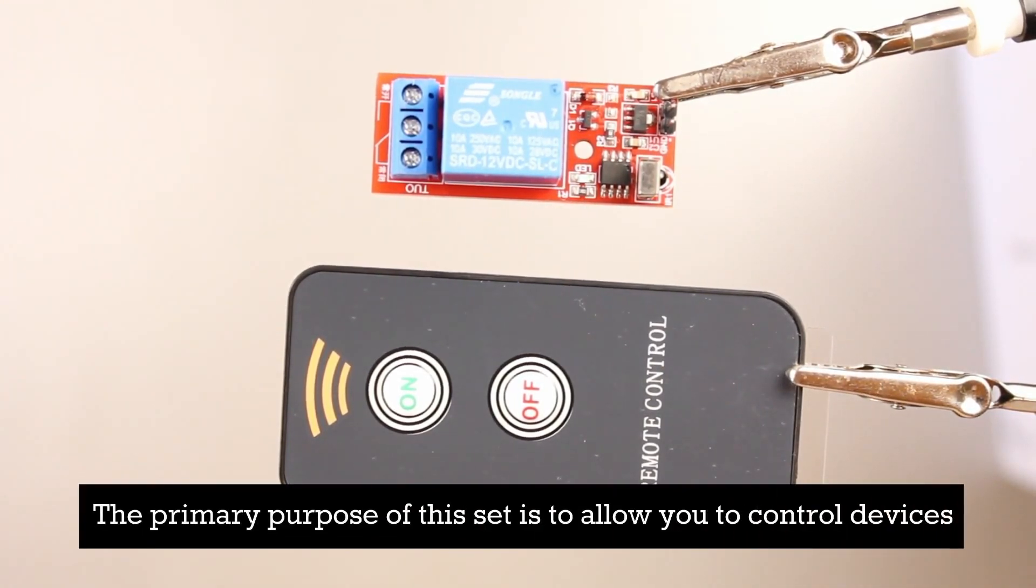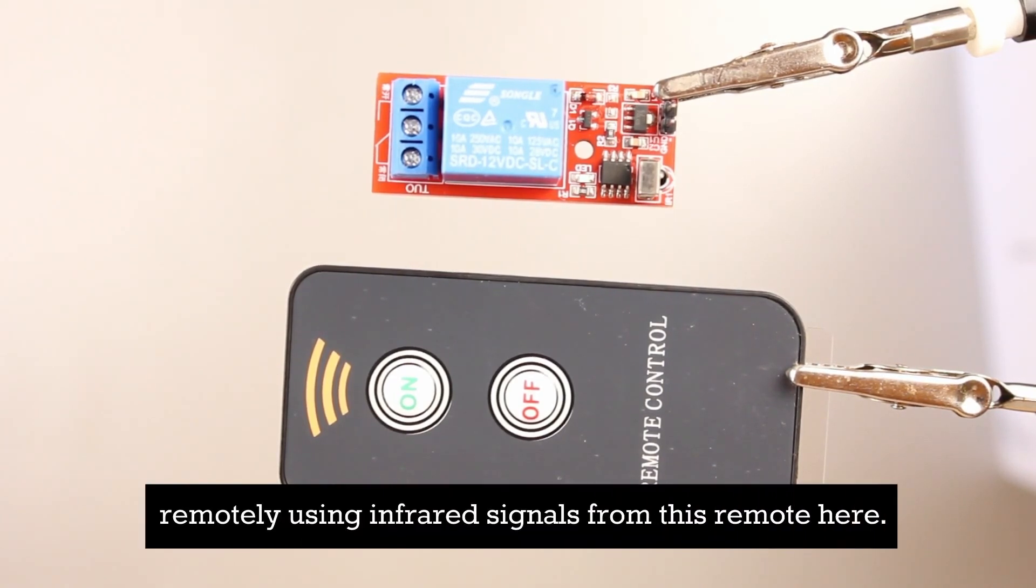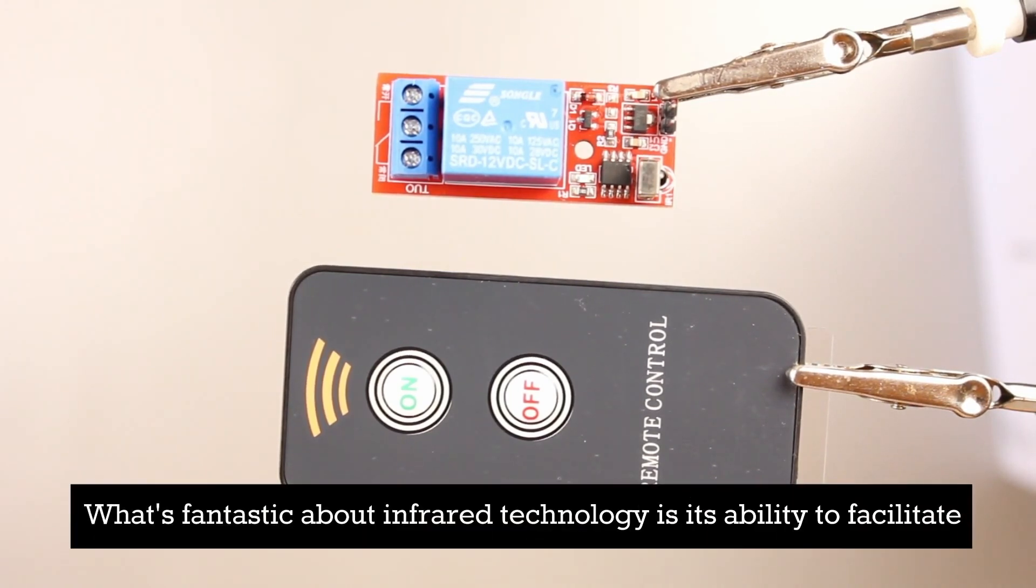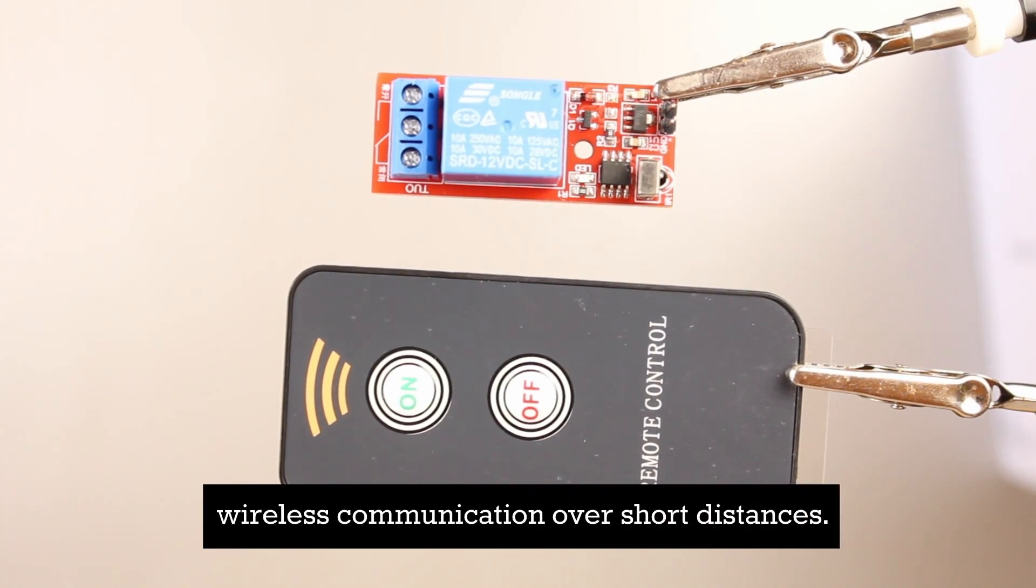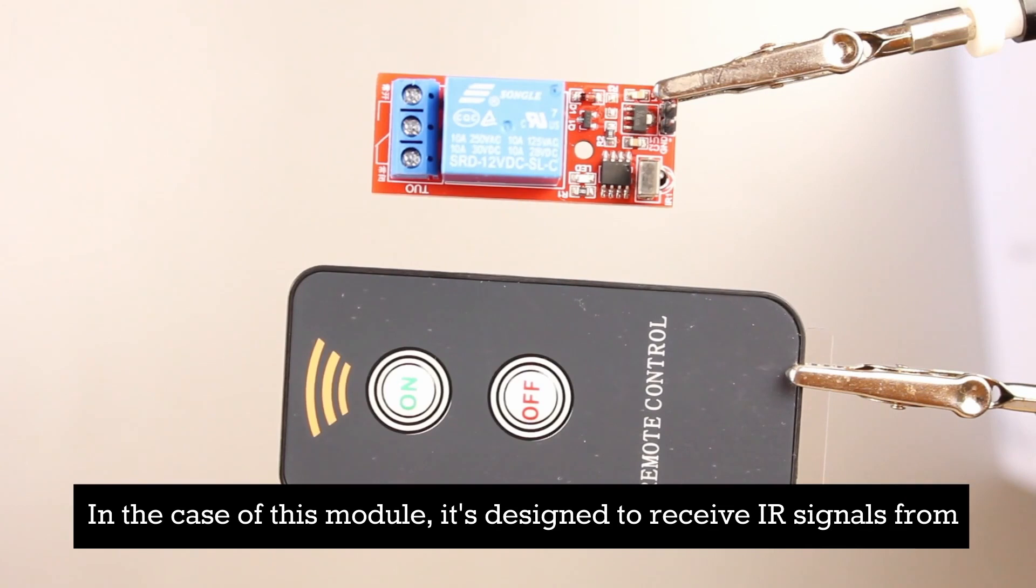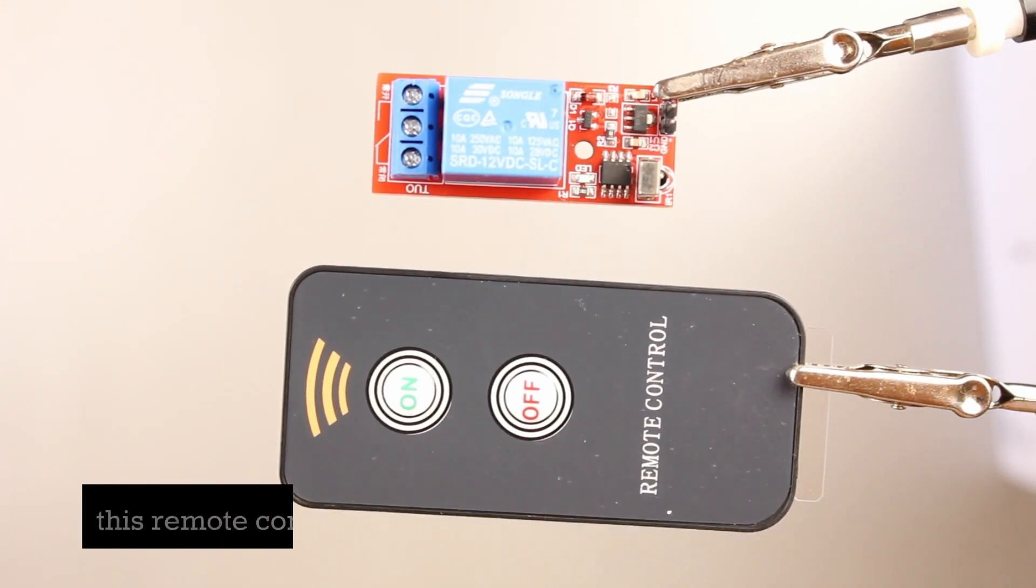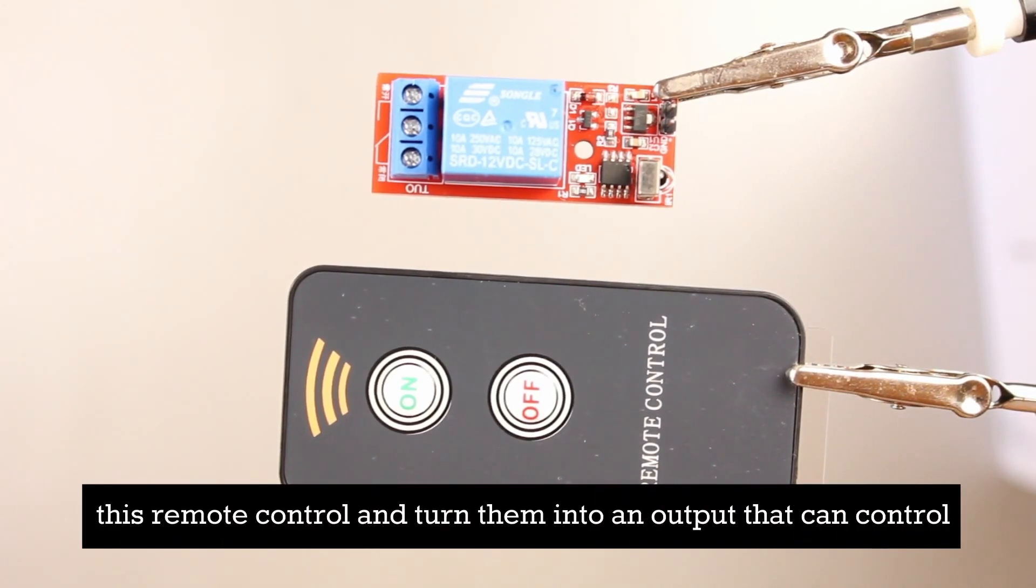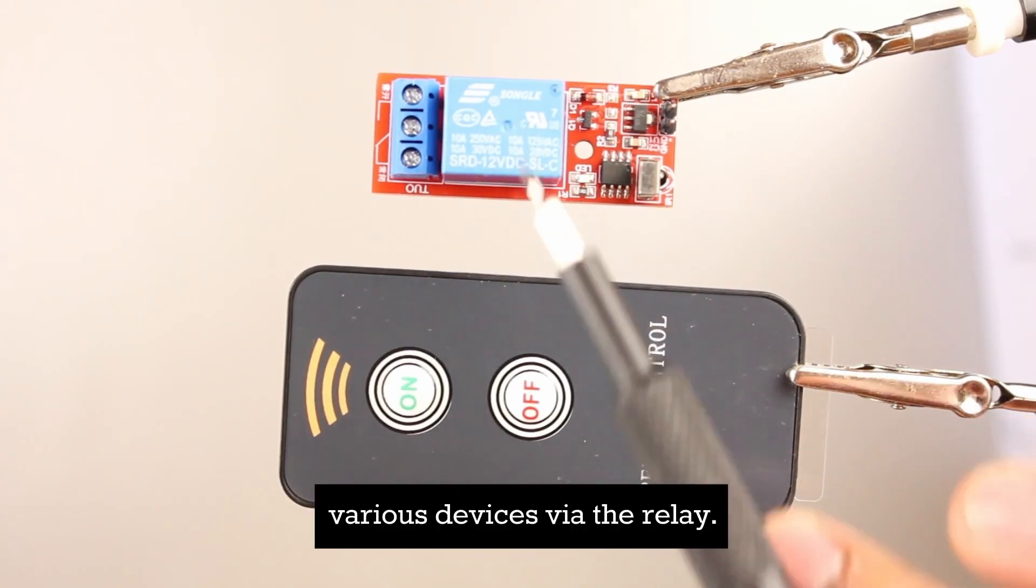The primary purpose of this set is to allow you to control devices remotely using infrared signals from this remote here. What's fantastic about infrared technology is its ability to facilitate wireless communication over short distances. In the case of this module, it's designed to receive IR signals from this remote control and turn them into an output that can control various devices via the relay.